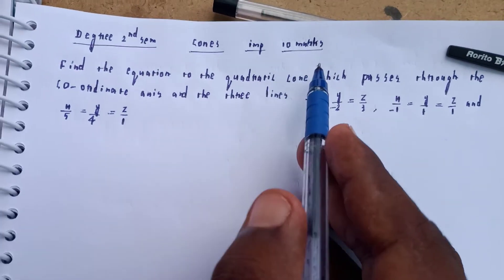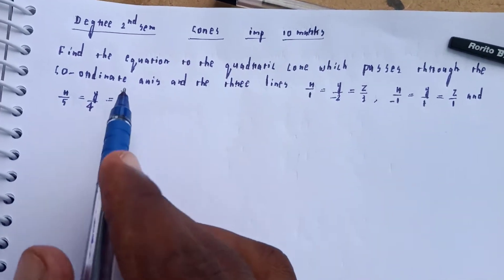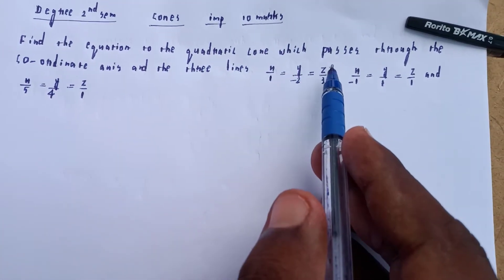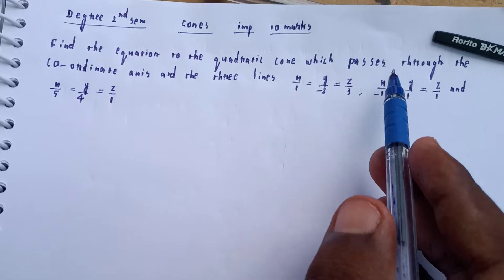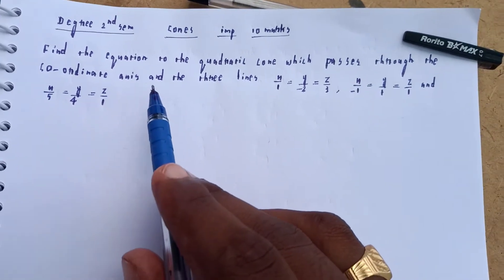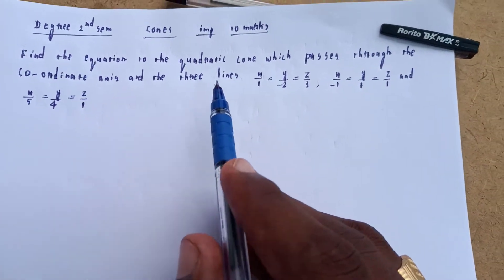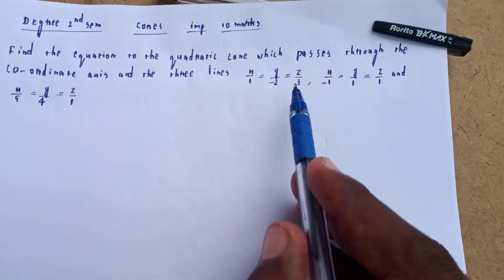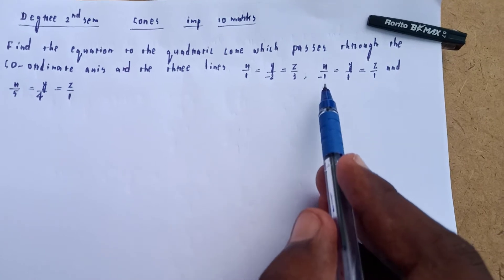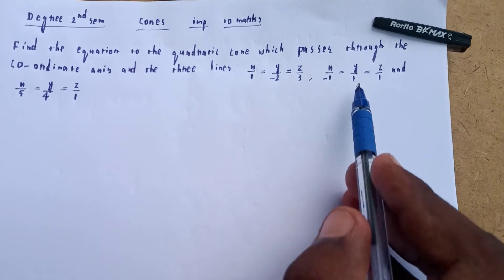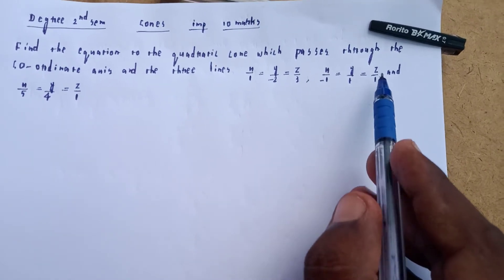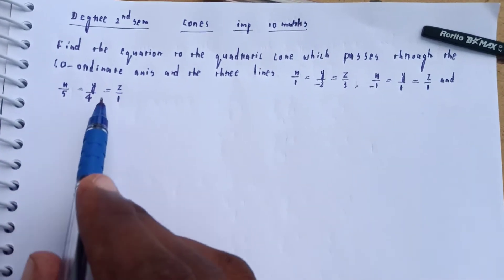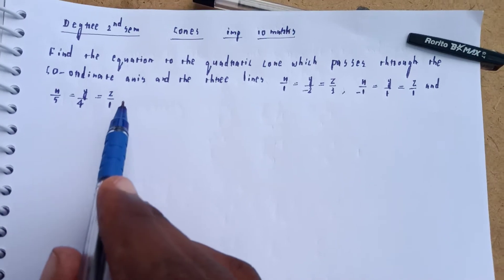Find the equation of the quadratic cone which passes through the coordinate axes and the three lines: x/1 = y/(-2) = z/3, x/(-1) = y/1 = z/1, and x/5 = y/4 = z/1.